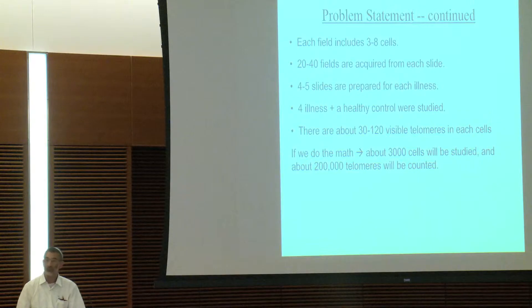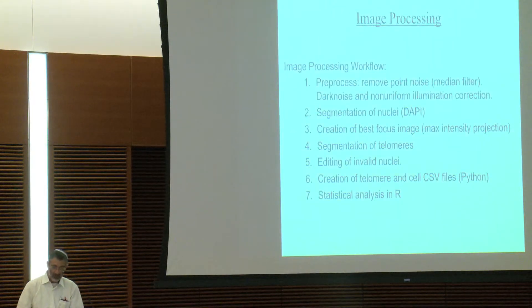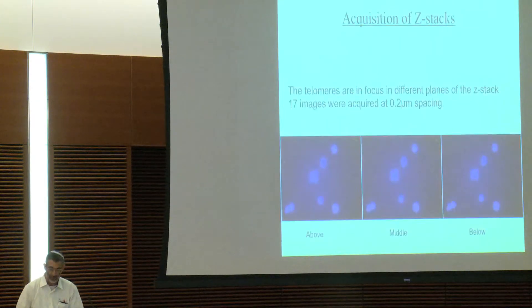So they weren't going to do this manually, and there's another problem, too, that they're not all in the same focus plane. So there's an image processing workflow, which I won't go into detail, but we have to segment the nuclei, segment the telomeres, count them, create a lot of data files, and then all that is dumped into R to do some statistical analysis.